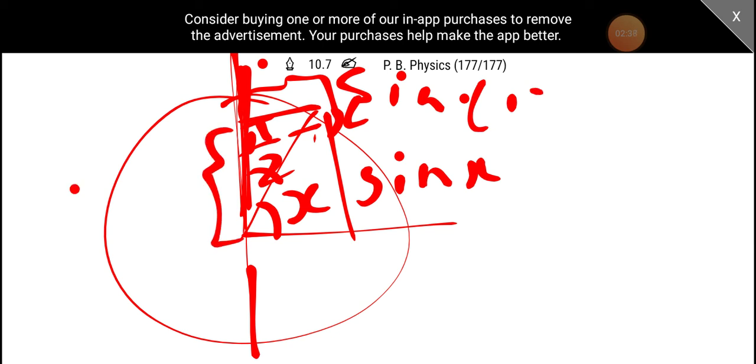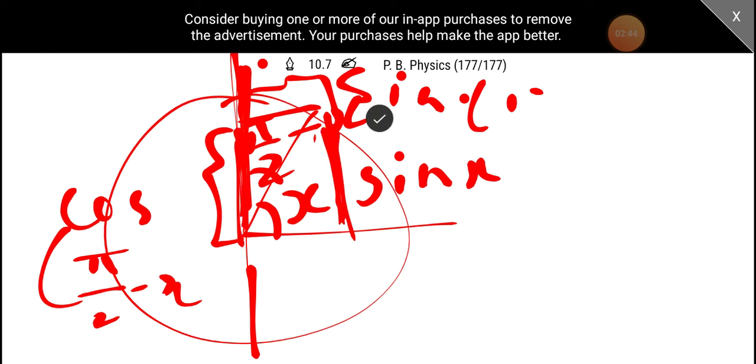Here is cos pi by 2 minus x. This is cos pi by 2 minus x. The length is the same. Cos pi by 2 minus x is sin x.